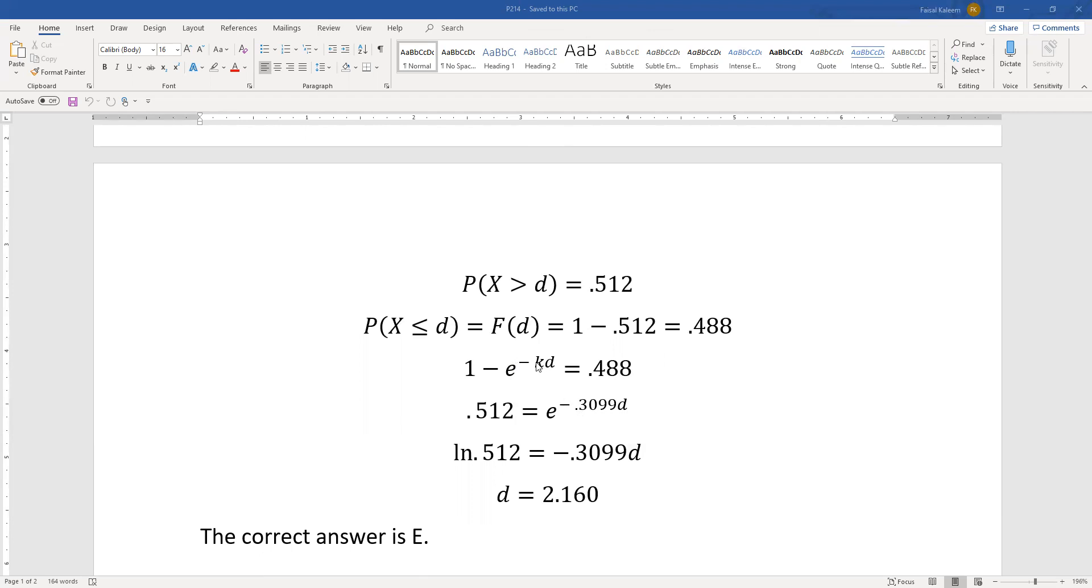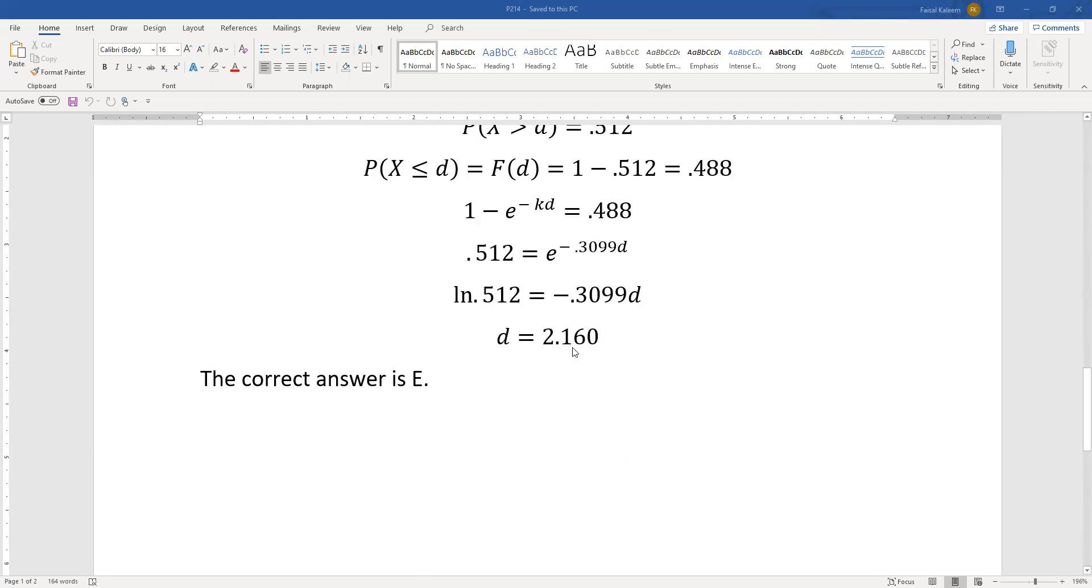negative 0.3099d. Now I've substituted the k value—k was 0.3099. Taking the natural log and then dividing by negative 0.3099, we get d equals 2.160. That was choice E.